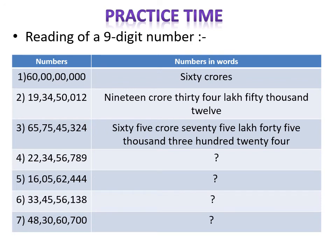It's practice time again — reading nine digit numbers. In the period of crores, two digits are shown: six and zero, so we read it as sixty crores. Then nineteen crores thirty-four lakh fifty thousand and twelve. Third example: sixty-five crore seventy-five lakh forty-five thousand three hundred and twenty-four. The remaining example is left as practice for you.